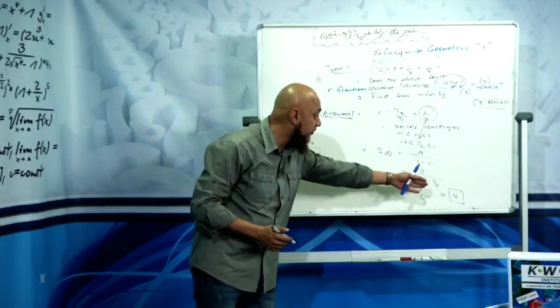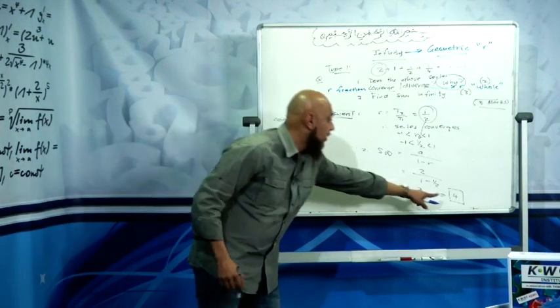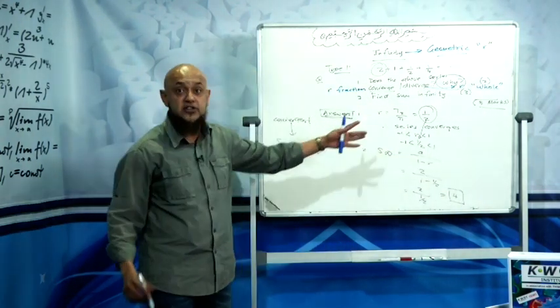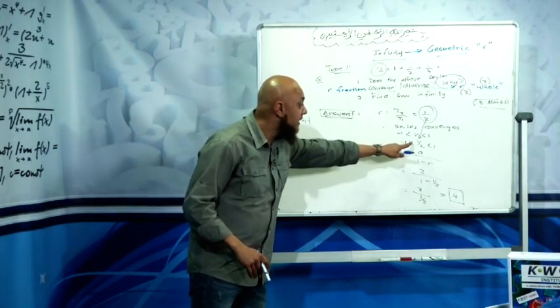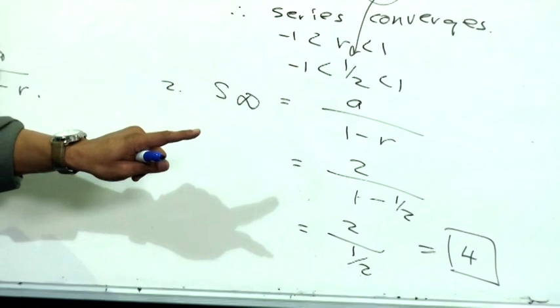Sometimes they might ask you to do this part first. You'll get four. Don't get confused if they ask you does it converge or diverge. Don't look at that and say that is four therefore it diverges. No, you look at your common ratio. If R is less than one but greater than minus one, it converges.